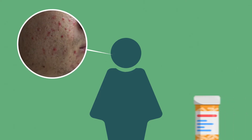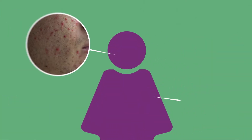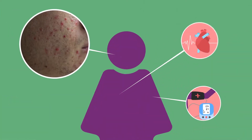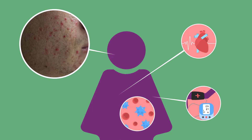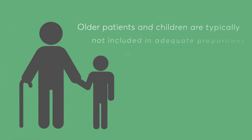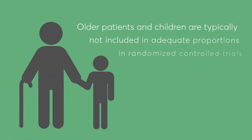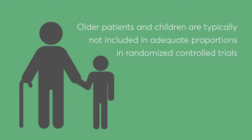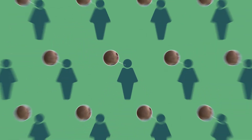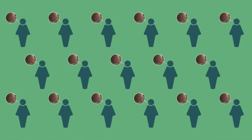First, clinical trials are often performed in relatively healthy people who only have the disease being treated with the tested drug. In the real world, many people have multiple illnesses at one time. Additionally, older patients and children are typically not included in adequate proportions in randomized controlled trials, making trial results difficult to generalize into a large, diverse patient population.